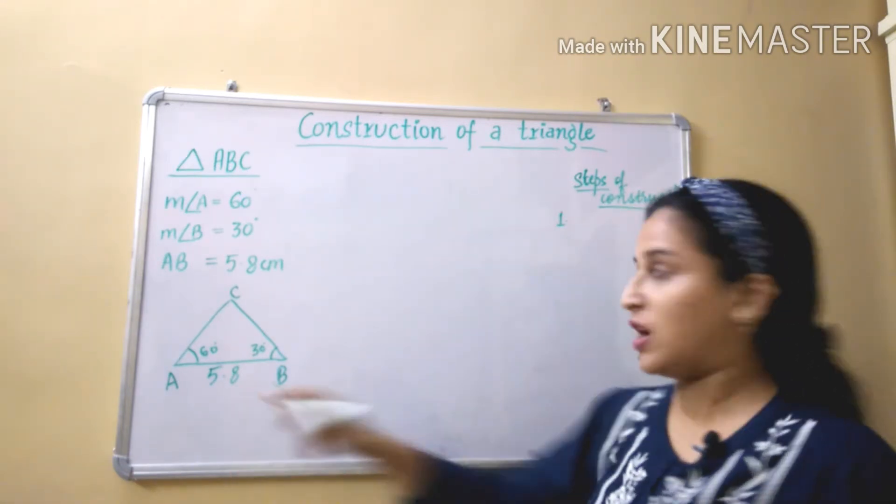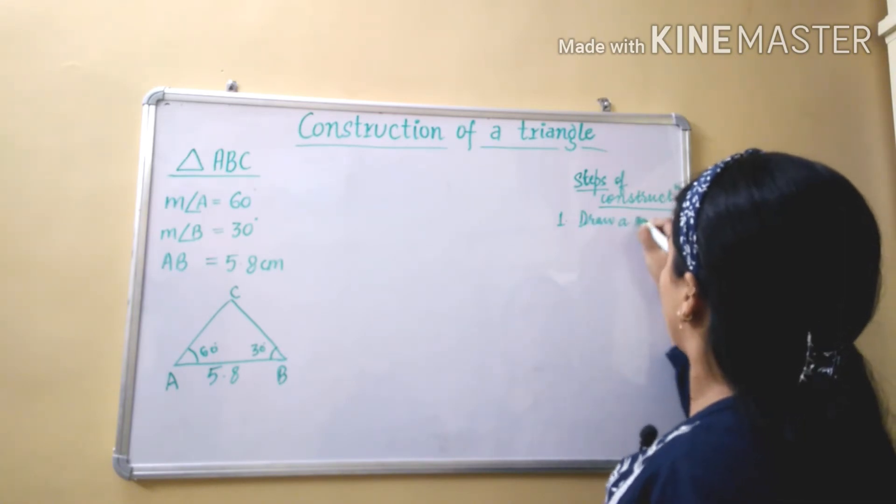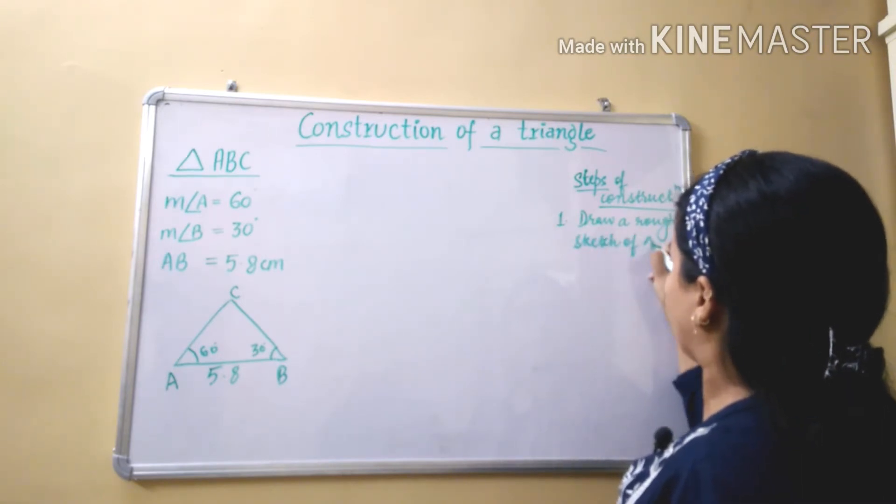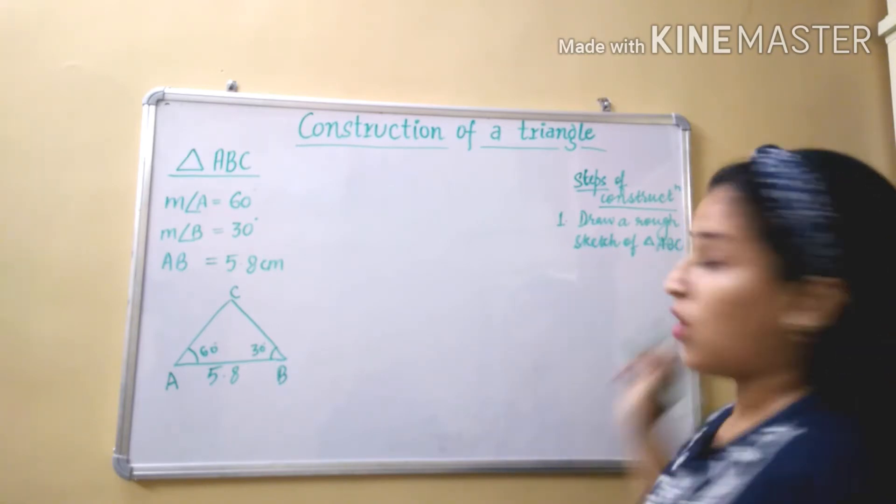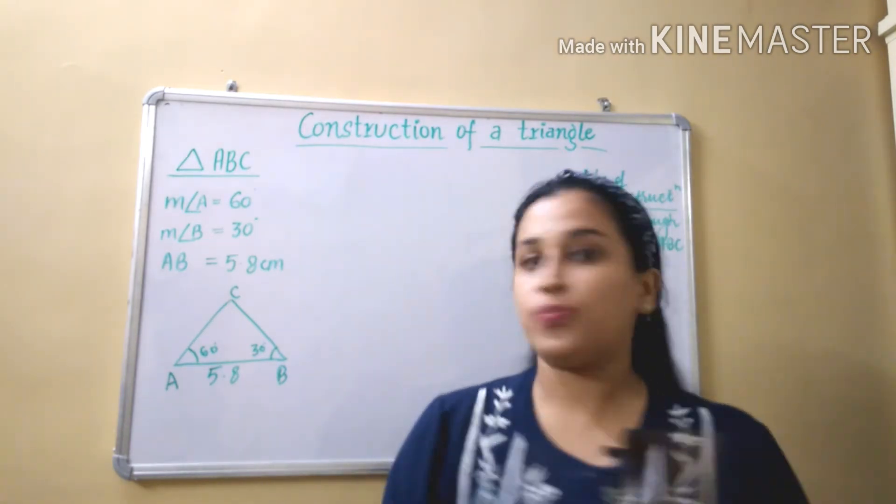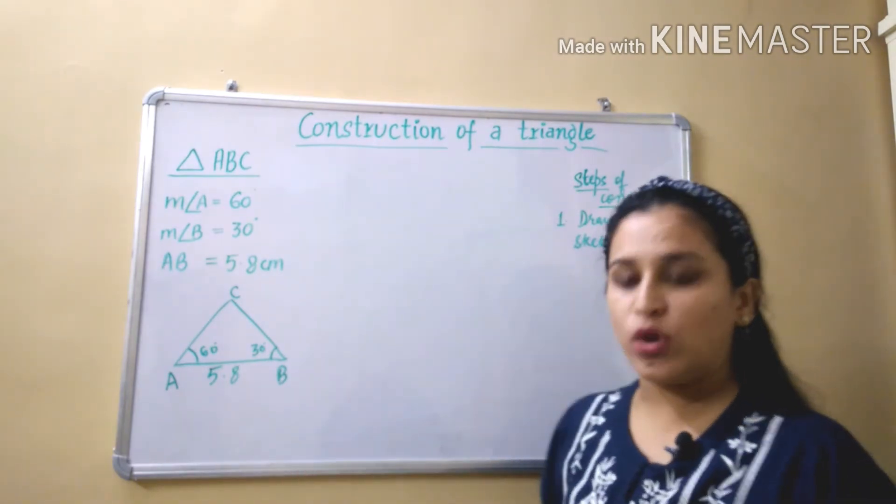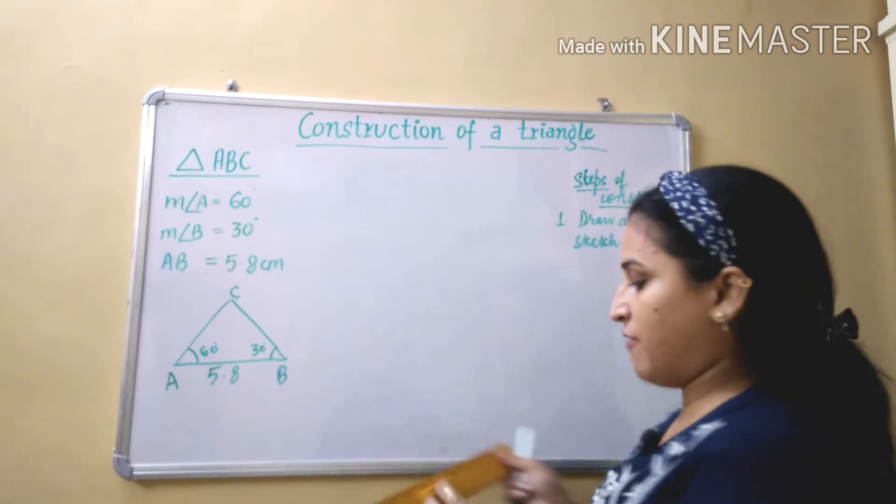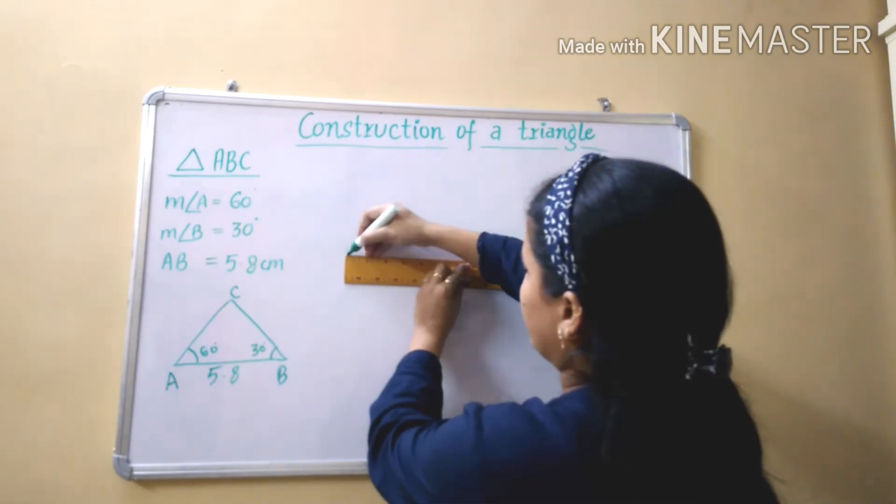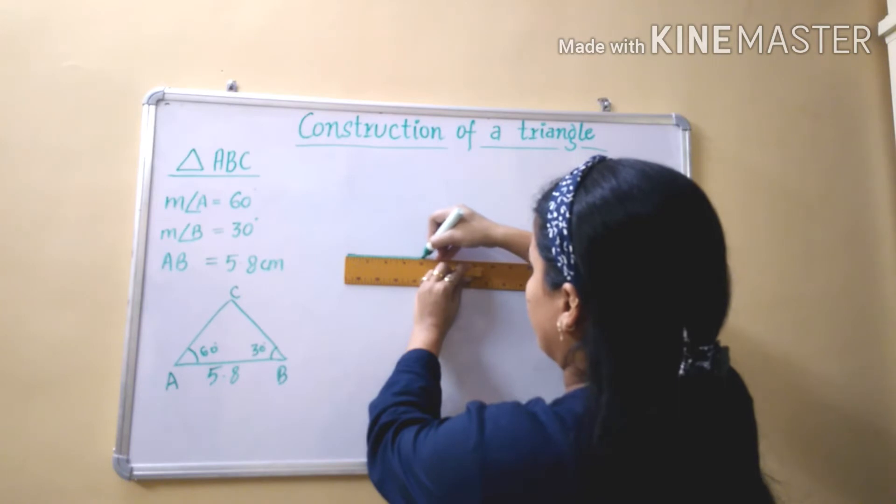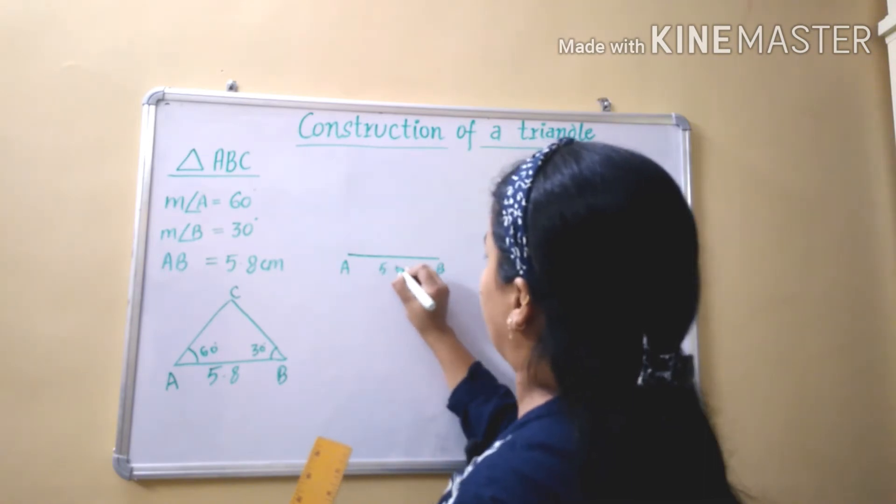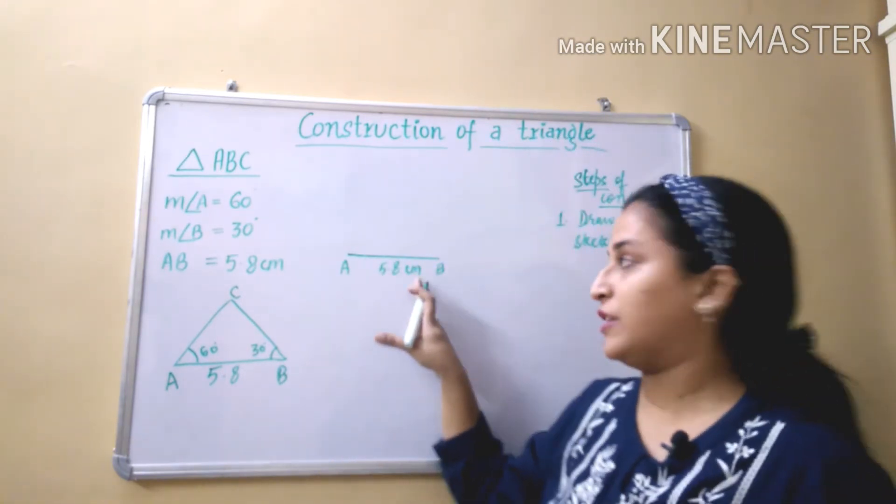So first step we have done: draw a rough sketch of triangle ABC. All time our first step of construction would be this. Next we are going to take our base now. Base is AB 5.8 cm. So here I am taking 5.8 cm. This is AB 5.8 cm, because it is exact that's why I have written it here.